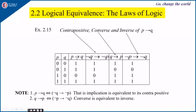The converse of P implies Q is Q implies P. The truth table for Q implies P gives values 1, 0, 1, 1. The inverse of P implies Q is negation of P implies negation of Q, which also gives truth table values 1, 0, 1, 1.